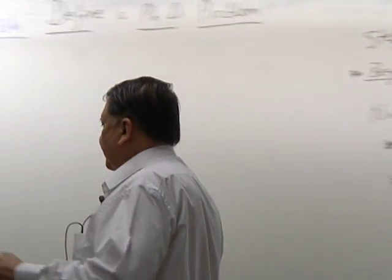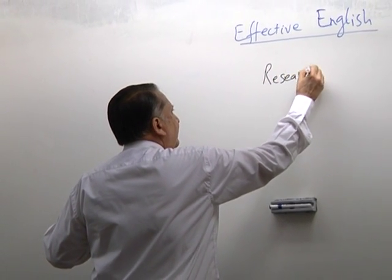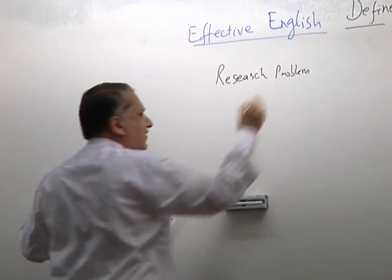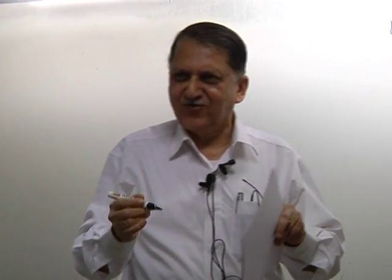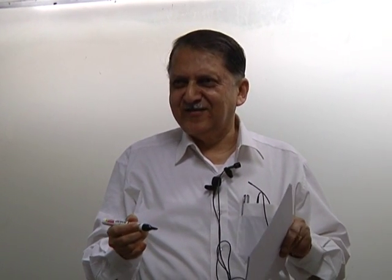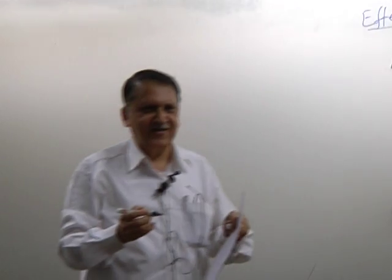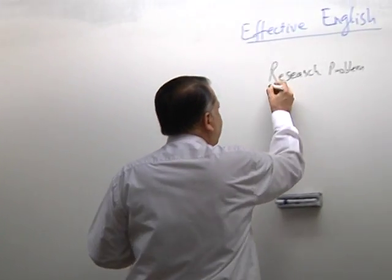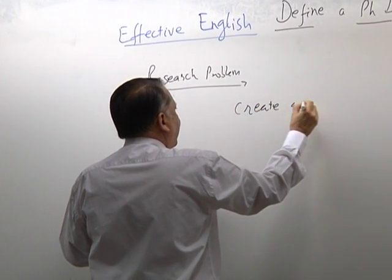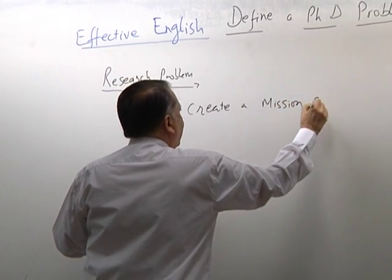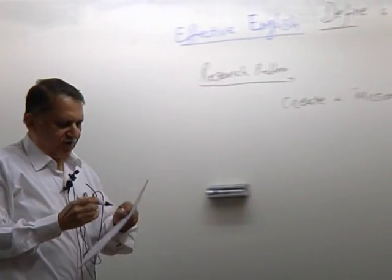The PhD problem — or rather the research problem, since 90% of you are M-Tech students — applies to both M-Tech and PhD. So we will say 'research problem' rather than 'PhD problem.' A research problem is where you create a mission statement, or what we call the goal.